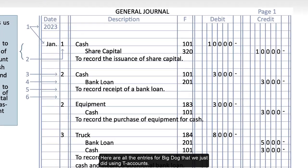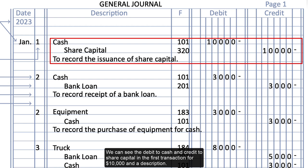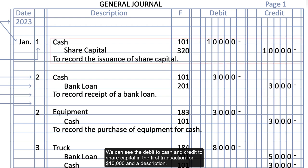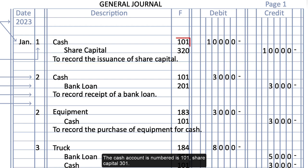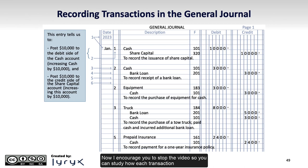Here are all the entries for Big Dog that we just did using T-accounts. We can see the debit to cash and credit to share capital in the first transaction for $10,000 and a description. The cash account is numbered as 101 and share capital 301. I encourage you to stop the video so you can study how each transaction is formatted and entered into the journal before moving on.